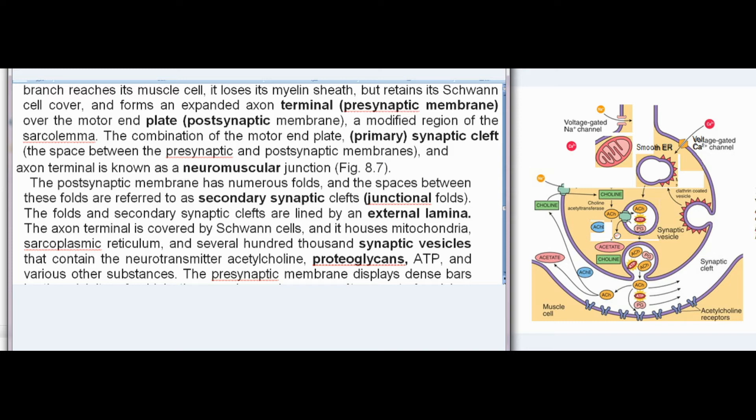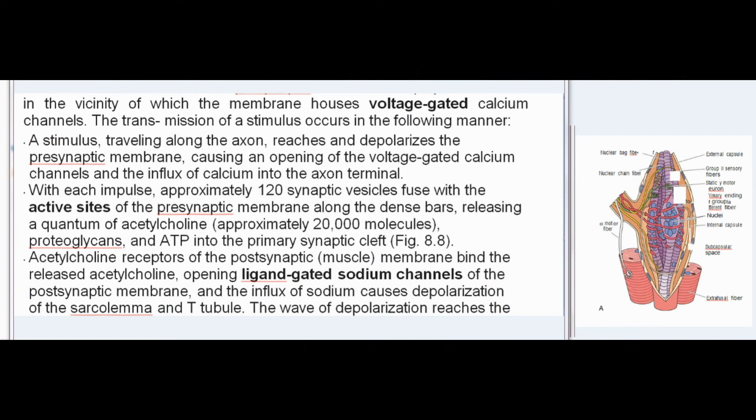The axon terminal is covered by Schwann cells and it houses mitochondria, sarcoplasmic reticulum, and several hundred thousand synaptic vesicles that contain the neurotransmitter acetylcholine, proteoglycans, ATP, and various other substances. The presynaptic membrane displays dense bars in the vicinity of which the membrane houses voltage-gated calcium channels. When a stimulus traveling along the axon reaches and depolarizes the presynaptic membrane, it causes an opening of the voltage-gated calcium channels and the influx of calcium into the axon terminal. With each impulse, approximately 120 synaptic vesicles fuse with the active sites of the presynaptic membrane along the dense bars, releasing a quantum of acetylcholine — approximately 20,000 molecules — proteoglycans, and ATP into the primary synaptic cleft.